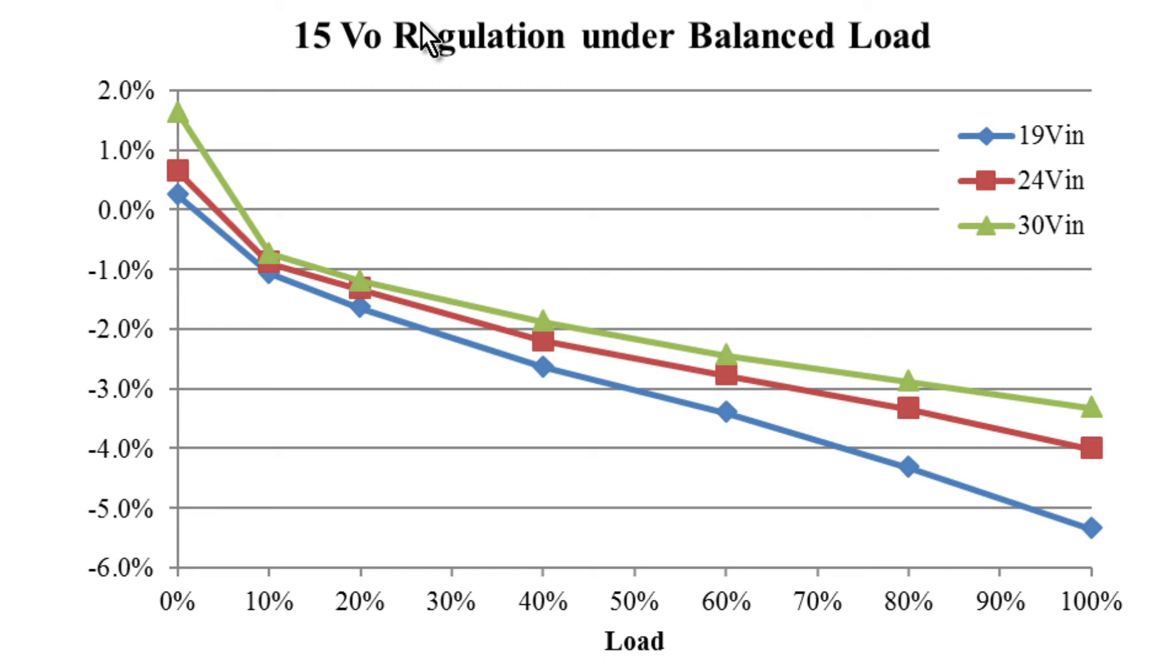On the right side, it's the 15V output regulation at balanced load, which means all three outputs are set at the same percentage of the output current, and it's tested under different VIN. As you can see, the variation is still within the 5% target.